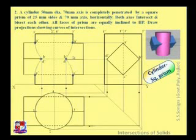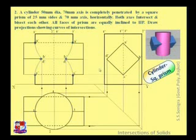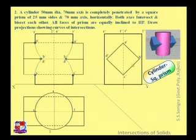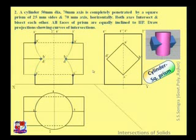Here this line will not appear, and here also this line will not appear. This is the final view. You can remove the generator lines as well because they are optional. So this is the final answer of the given problem: a vertical cylinder with a horizontal penetrating prism. These are the points of intersection. The full lines and the dotted lines — lines one, two, and three would be dotted lines.